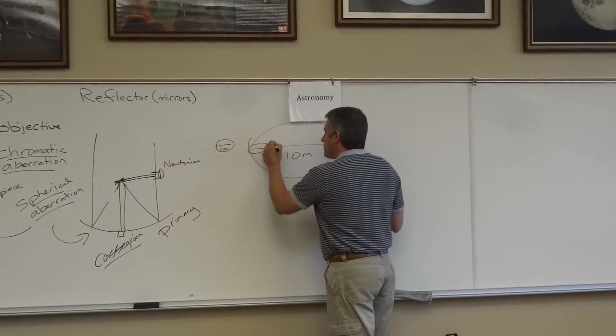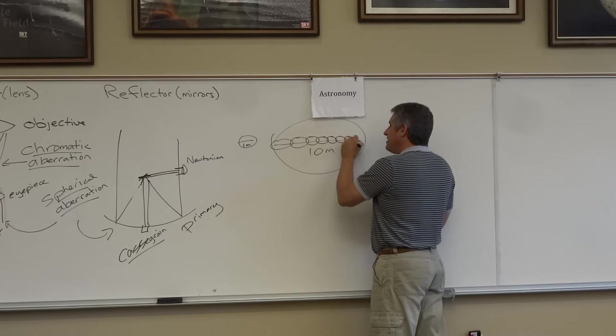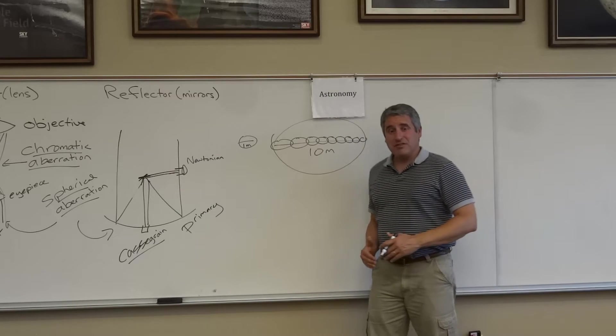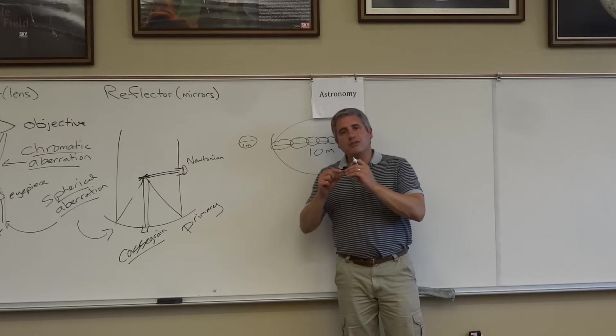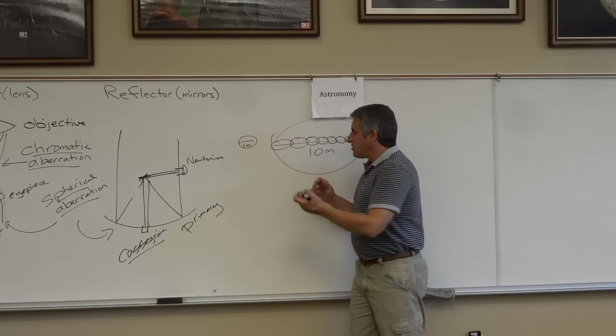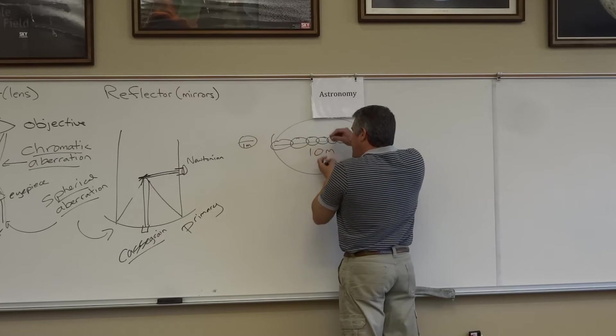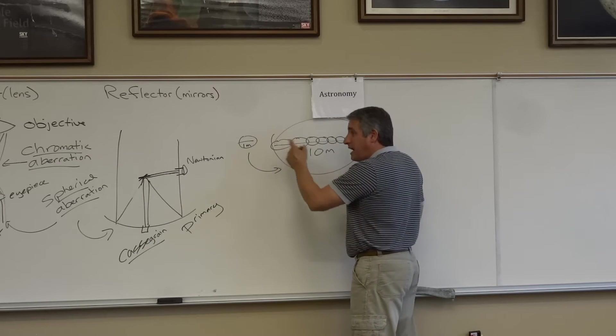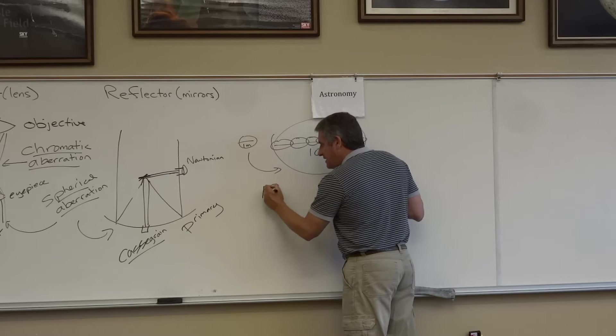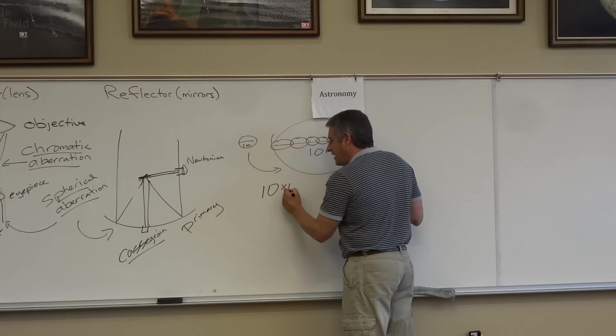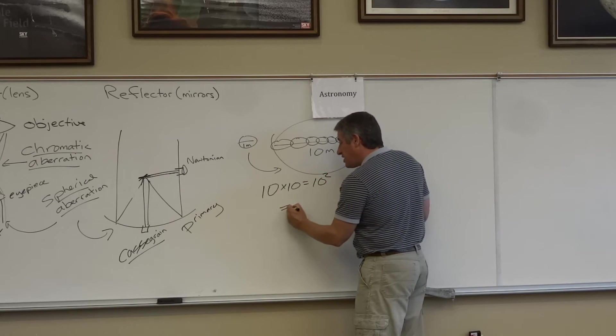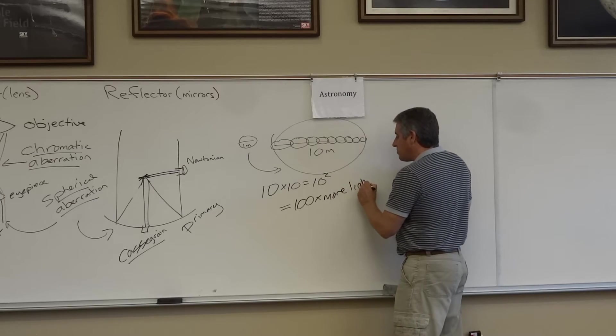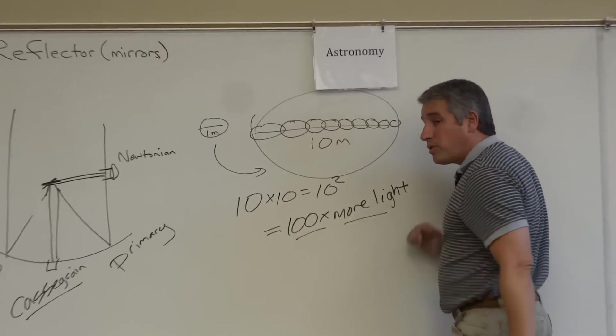In fact, you're right, you can fit 10 of these across if I drew it to scale, but the reality is that there's way more area to be covered here. In fact, area is the key word. Area goes in two dimensions. So this thing is 10 times bigger in one dimension and 10 times bigger in another. So how much more area does a big 10 meter telescope have compared to a 1? Not 10, but 10 times 10 or 10 squared. You can gather 100 times more light with a 10 meter telescope than you can with a 1 meter telescope.